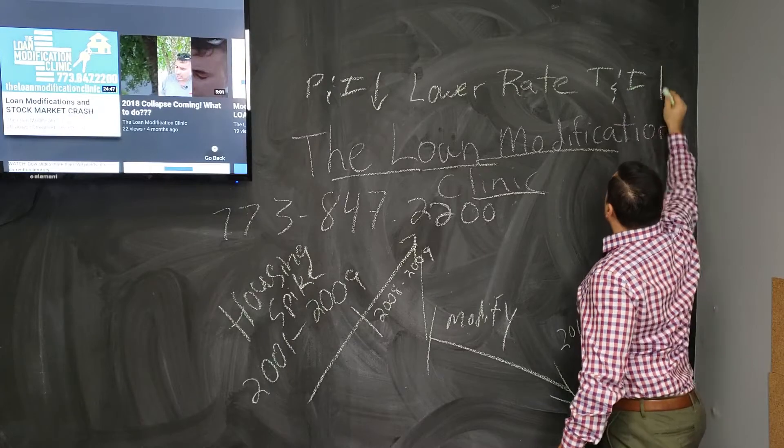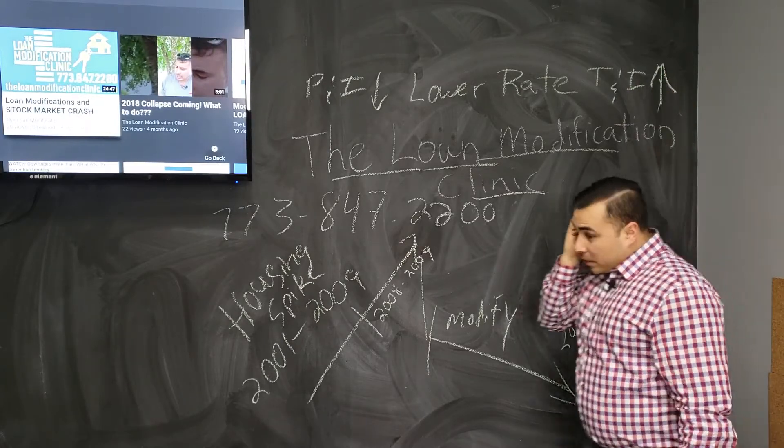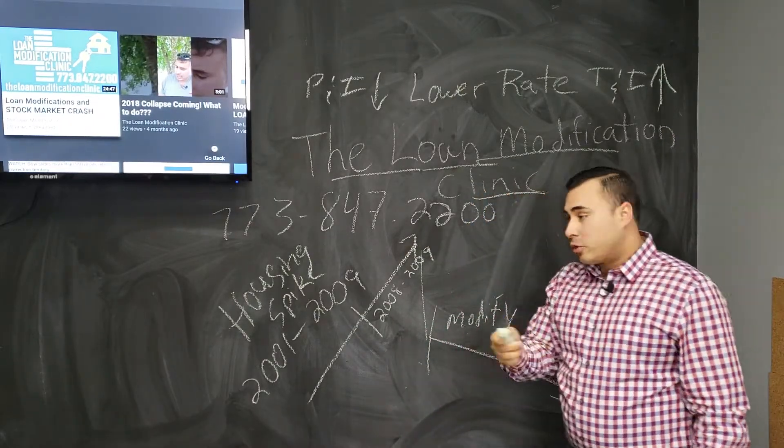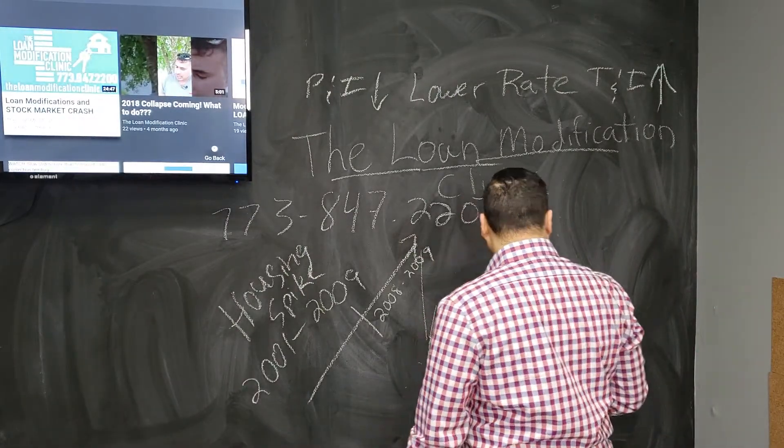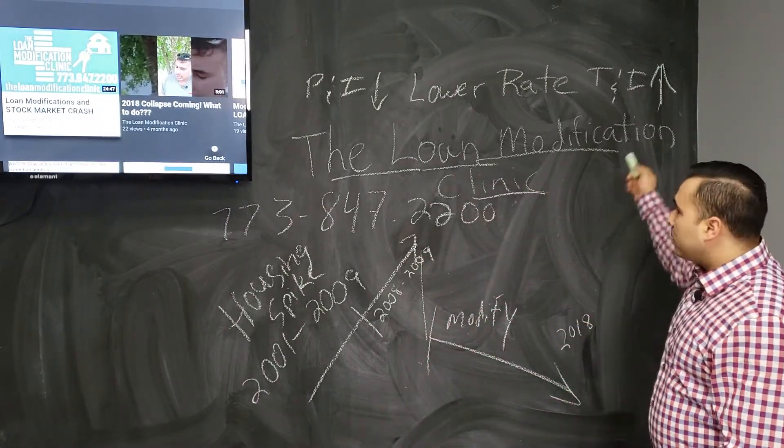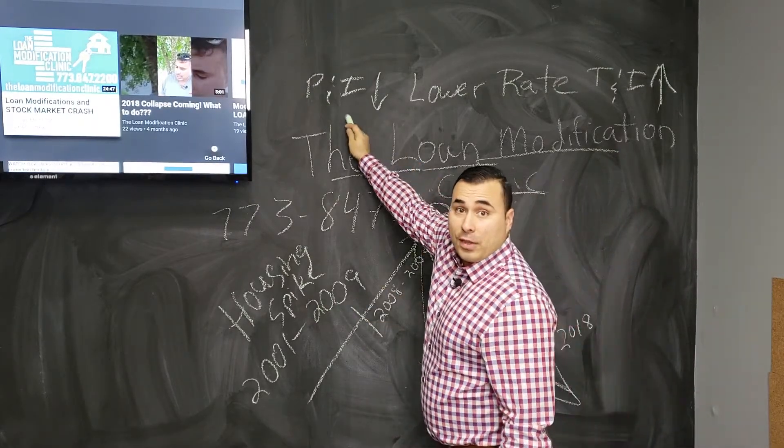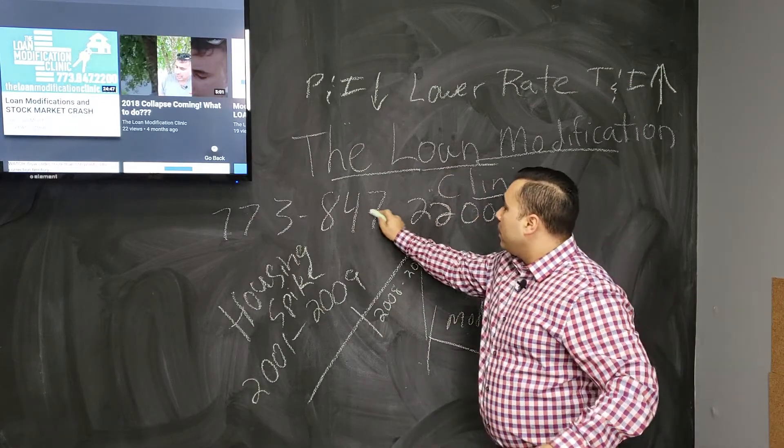Then you've got your taxes and insurance going higher. Why is taxes and insurance going higher? Well, because our economy is in a state of an emergency, and they're trying to get the money from somewhere, so they're going to increase your taxes. You're going to see your taxes go up, but the loan modification can help you lower that principal and interest payment.